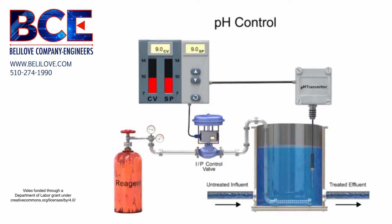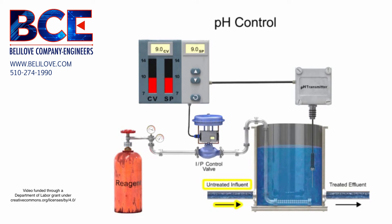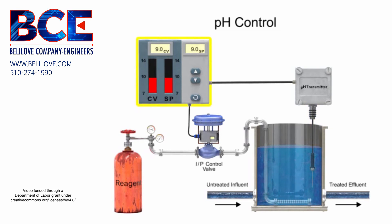An example of an automatic pH level control system is a water treatment process where lime-softened water is maintained at a pH of 9 using carbon dioxide as a reagent. As the untreated water or influent enters the tank, the pH is continuously monitored by the pH sensor. The sensor is the feedback device to the controller where the setpoint is compared to the control value.